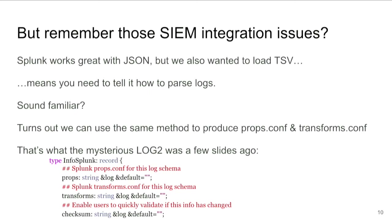In Splunk, the configuration that tells it how to read a log stream in tab-separated format is in two files: props.conf and transforms.conf. My idea was to apply the same mechanism. I've got a second log now that I'm creating called log Splunk, and it has two fields — props and transforms — that I'll throw the strings into to create those two files, and a third field called checksum. The idea for checksum is to simplify operations.